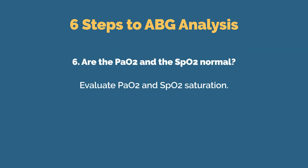Finally, in step six, we evaluate the partial pressure of oxygen and/or oxygen saturation levels. You should know your norms for each of these, and if they are below normal, then it's evidence of hypoxemia.